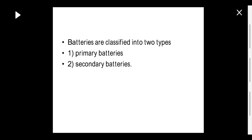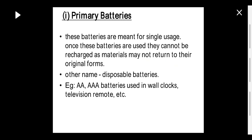Batteries are classified into two types: primary batteries and secondary batteries. Primary batteries are non-rechargeable — they are meant for single usage only. Once used, they cannot be recharged because the chemical reaction in them is not reversible. Therefore, once discharged they cannot be recharged again. These are also called disposable batteries. Examples are AAA batteries used in wall clocks, television remotes, etc.